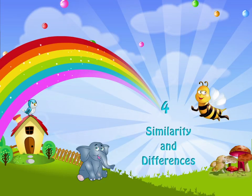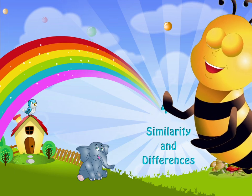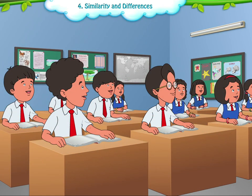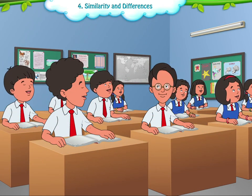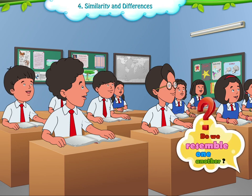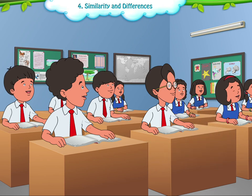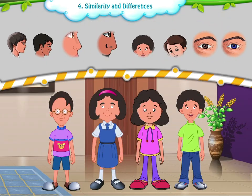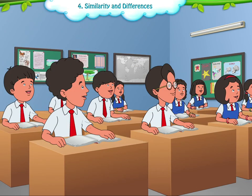Chapter 4: Similarity and Differences. Let's turn around and look towards our partner. Do we resemble one another? No. Although we have the same body parts, we also look different from one another. We differ from one another on the following basis.